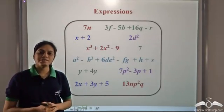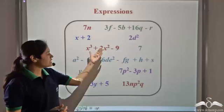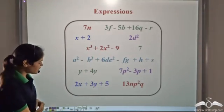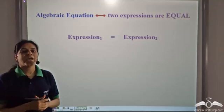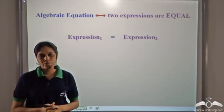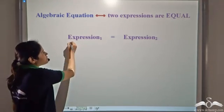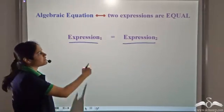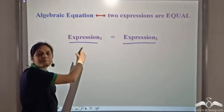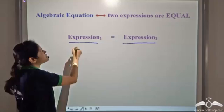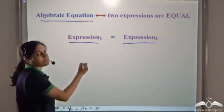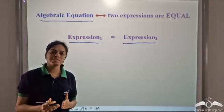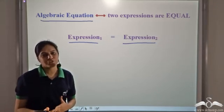Now, you have already learned about expressions. There are different types of expressions. When two expressions are equal, an algebraic equation is formed. So if expression one equals expression two, we can represent it using an equal-to sign, and this is an algebraic equation.